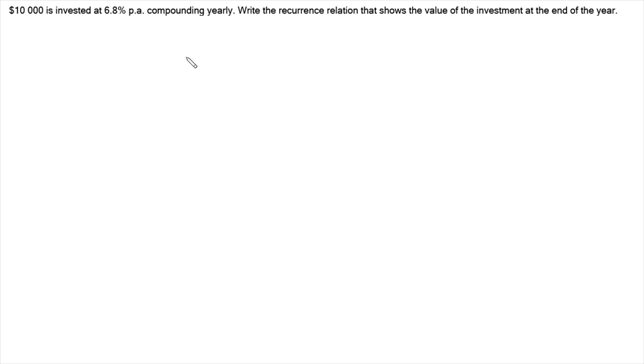Hi, in this video I'm looking at this question where we've got $10,000 invested at 6.8% per annum compounding yearly. And we want to write the recurrence relation that shows the value of that investment at the end of each year.